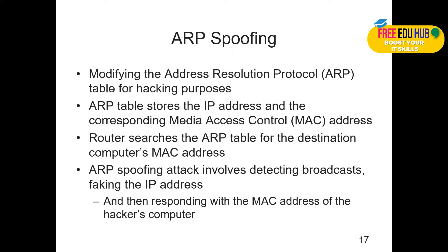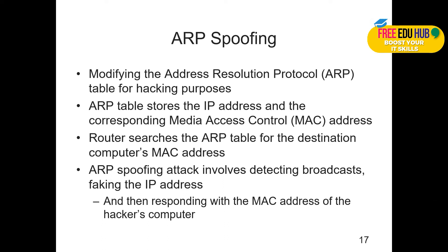ARP spoofing involves modifying the Address Resolution Protocol table for hacking purposes. The ARP table stores IP addresses and their corresponding MAC addresses. The router searches the ARP table for the destination computer's MAC address. An ARP spoofing attack involves detecting a broadcast, faking the IP address, and responding with the MAC address of the hacker's computer. The ARP table maintains a log of IP and MAC addresses, and if the same IP and MAC communicate consistently, it is considered safe communication.